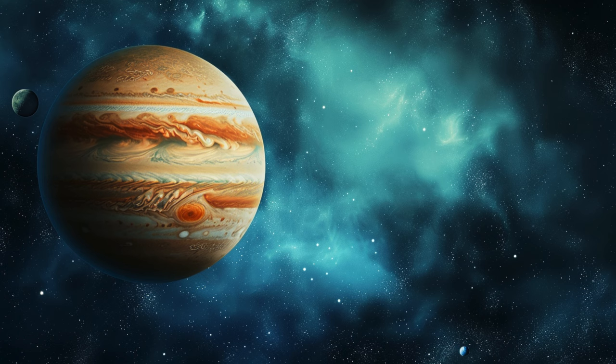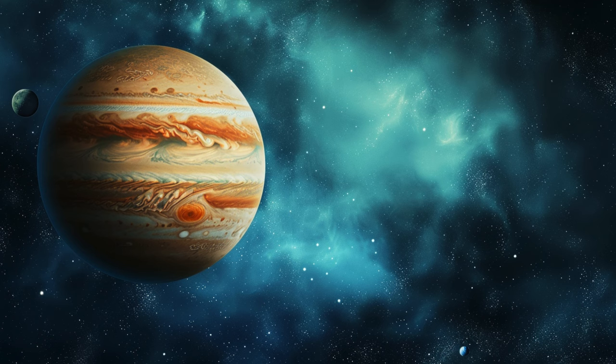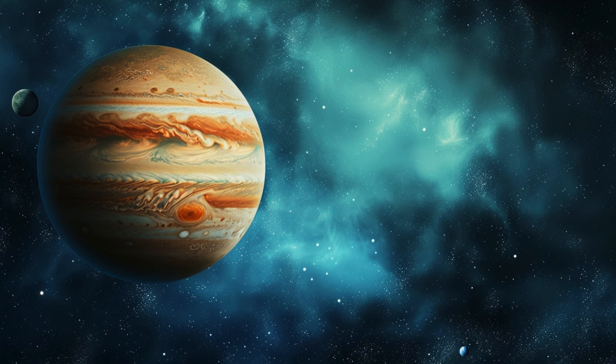Jupiter also has many moons, over 80. Jupiter's four largest moons are called Io, Callisto, Europa, and Ganymede. Let's say goodnight to Jupiter. Goodnight Jupiter.